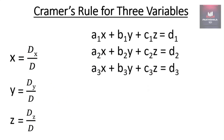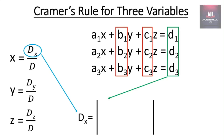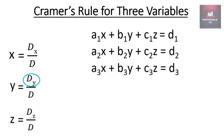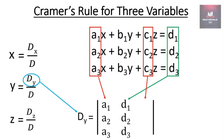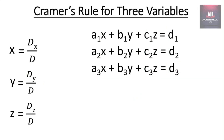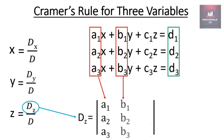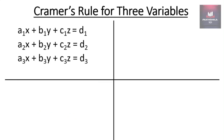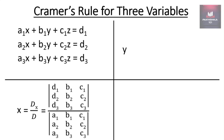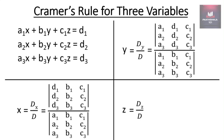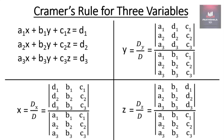Dx will be equal to the determinant of constants, y coefficients, and z coefficients. Dy is equal to the determinant of x coefficients, constants, and z coefficients. Dz is equal to the determinant of x coefficients, y coefficients, and constants. So the summary is: x equals Dx by D, y equals Dy by D, and z equals Dz by D. Here we will use the concept of determinants to solve a three-by-three order determinant.